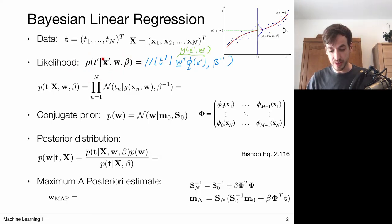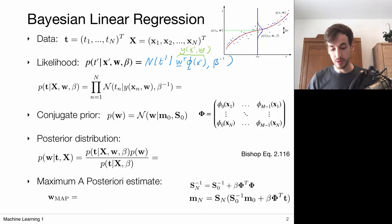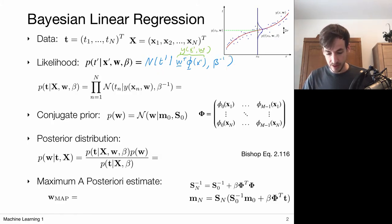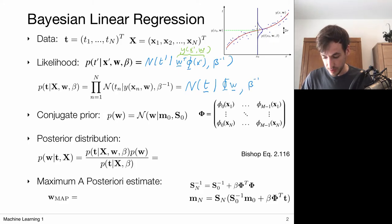This likelihood gives the likelihood for a single data point given model parameters W and precision beta. We always assume that our data is IID — independently identically distributed according to the same distribution. That means the likelihood for the entire data set is given by the product of all individual likelihoods. If each individual likelihood is a single Gaussian, then the joint likelihood for all data points together can also be formulated as a multivariate normal distribution, giving the likelihood for all target values together given the mappings from inputs to corresponding means.